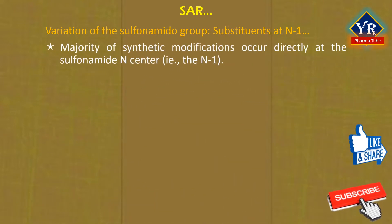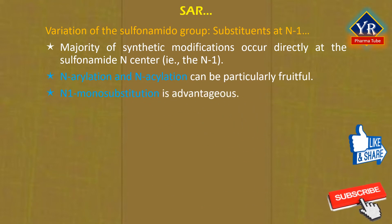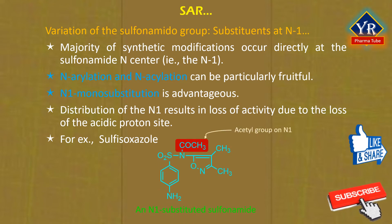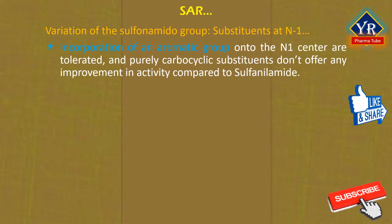The majority of synthetic modifications of the sulfonamides has encompassed substitution directly onto the sulfonamide nitrogen center, i.e. the N1 position of the sulfonamide. In this context, N-arylation and N-acetylation can be particularly fruitful. Mono-substitution is usually advantageous. Disubstitution of the sulfonamido nitrogen atom usually results in loss of antibacterial activity due to the loss of the acidic proton site. A notable exception is in which a simple acetyl group is joined to an aryl-substituted sulfonamide at the N1 position, for example, sulfisoxazole. The incorporation of an aromatic group directly onto the sulfonamido N1 center is tolerated, but purely carbocyclic substituents do not offer any improvement in activity compared to sulfonamide.